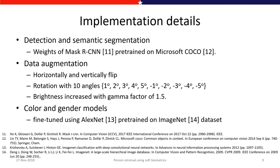For implementation, person detection with semantic segmentation uses Mask RCNN pre-trained on the Microsoft COCO dataset. Data augmentation is used to increase dataset size for model training — including horizontal and vertical flips, rotation with minus five to five degrees, and brightness increase with a gamma factor of 1.5 to handle illumination changes. Height is estimated using the camera calibration process, while color and gender are classified using deep learning techniques. LXNet, pre-trained on ImageNet, is used for both color and gender models.